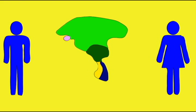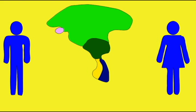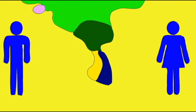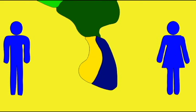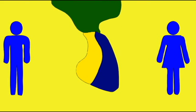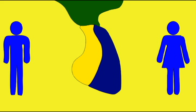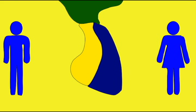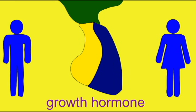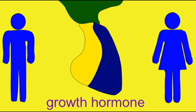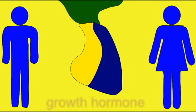The anterior pituitary secretes a number of major peptide hormones. One of these is growth hormone, a hormone which unlike most affects almost every cell in the body. It causes cells to take up amino acids, to increase their rates of cell division, and in general it causes a number of growth promoting effects throughout most tissues of the body.